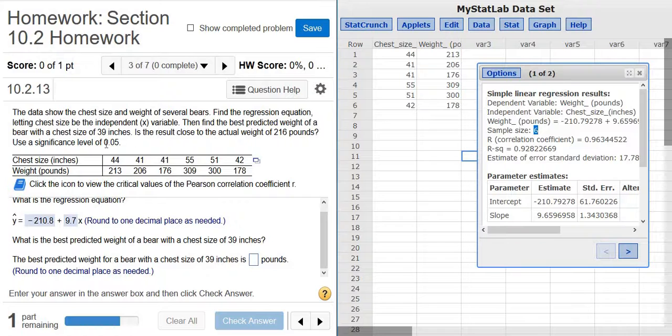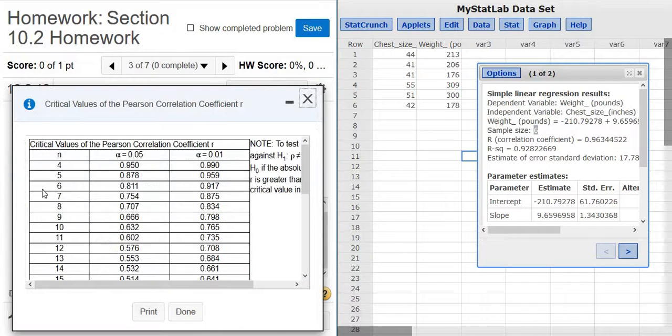Right, n is 6, alpha is 0.05, so we click this little chart, and then there's our critical value right there, 0.811. Right? Alpha is 0.05, n is 6. So r is bigger than this number. So yes, we have a straight line pattern.